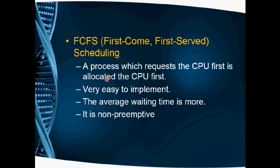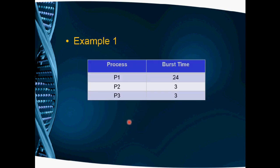The first one is FCFS — First Come First Serve. The process which requests the CPU first is allocated the CPU first. This algorithm is non-preemptive, meaning once a process starts executing on the CPU, we do not allow another process in until the current one finishes. Compared to other scheduling algorithms, the average waiting time is generally poor.